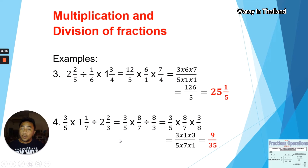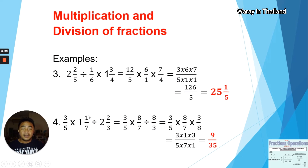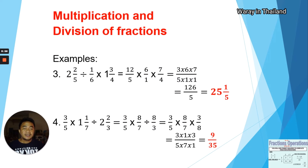Number four: three over five times one and one-seventh, divided by two and two-thirds. The first step is to change the mixed numbers to improper fractions and change the division to multiplication. One and one-seventh: seven times one is seven, plus one is eight, so eight over seven. Two and two-thirds: three times two is six, plus two is eight, so eight over three. Now we change division to multiplication and get the reciprocal of the succeeding term.